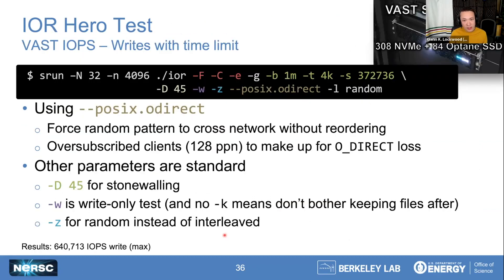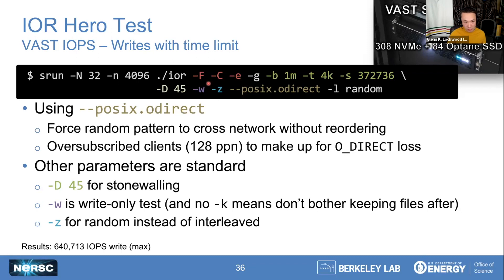We do measure IOPS for our all-flash file systems now. Here is an example of a hero IOPS run we did on a small parallel file system — not Lustre, it's VAST. We used O_DIRECT to make sure every single random write that IOR generated went over the wire as-is rather than letting things pile up in local page cache. With standard cache-avoidance arguments (F, C, E, and G), a 4K transfer size, an arbitrarily large number of segments because we're using stonewalling to cut off at 45 seconds, -Z to switch IOR into random mode, and O_DIRECT, we also use a parameter that makes IOR generate random incompressible data — useful if a file system does data reduction like ZFS compression.